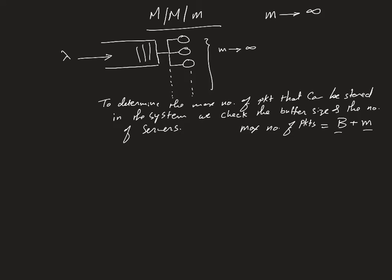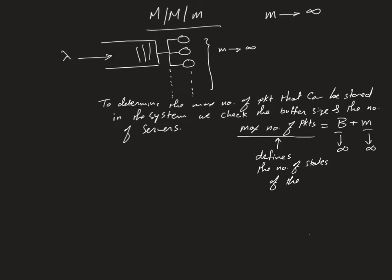In general, the maximum number of packets that can be in the system equals the buffer size plus the number of servers. In this case, both go to infinity, so the system has infinite capacity. This maximum number of packets defines the number of states of the Markov chain.